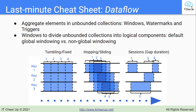By default, there is a single global window. Before you can use a grouping transform such as GroupByKey on an unbounded PCollection, you need to define a non-global windowing function or non-default trigger.